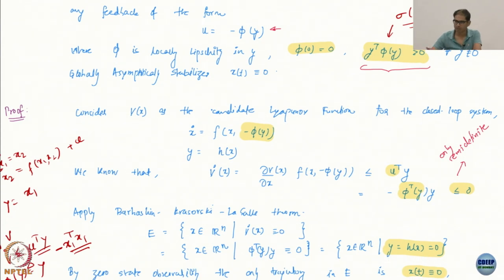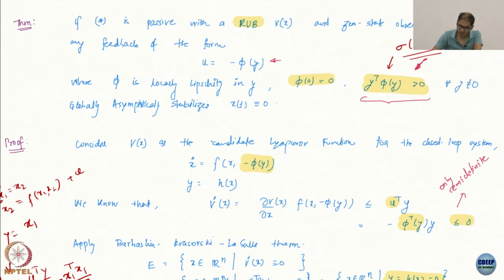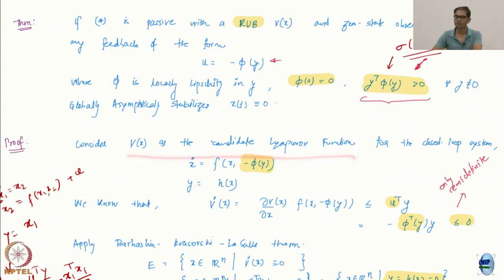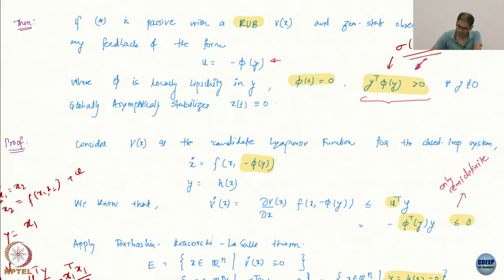Let's look at the proof to see what happens. The V that we have — we are already assuming that for this system you have a radially unbounded V. So we take this as the candidate Lyapunov function, because it is already C1 and already radially unbounded. We take this as the candidate Lyapunov function for the closed-loop system.